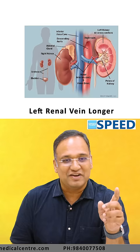The most common embryological abnormality of the upper urinary tract is duplication of the renal pelvis. The most common congenital anomaly of the urethra is hypospadias.